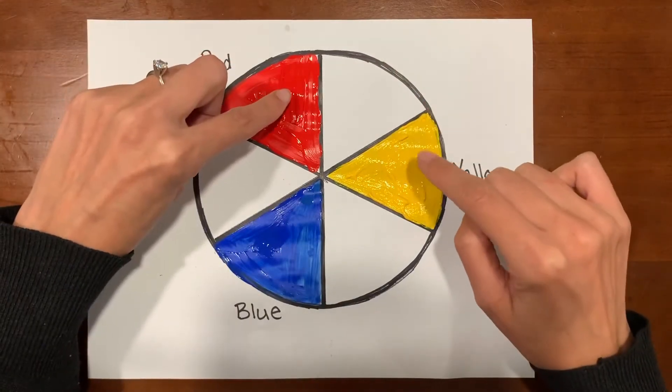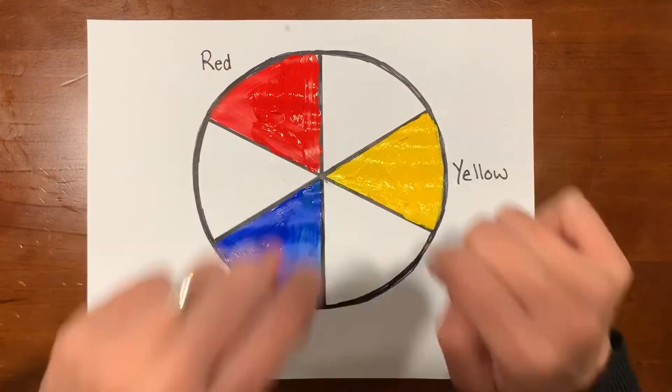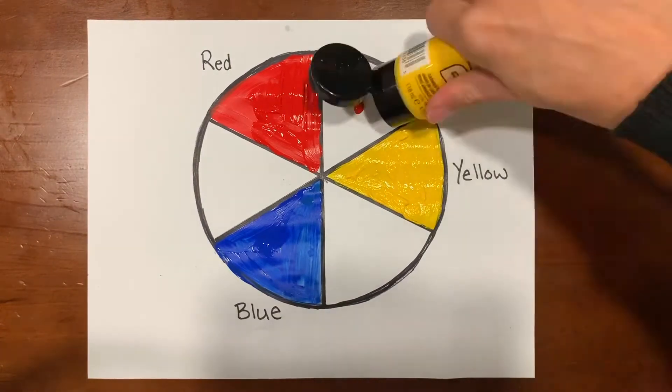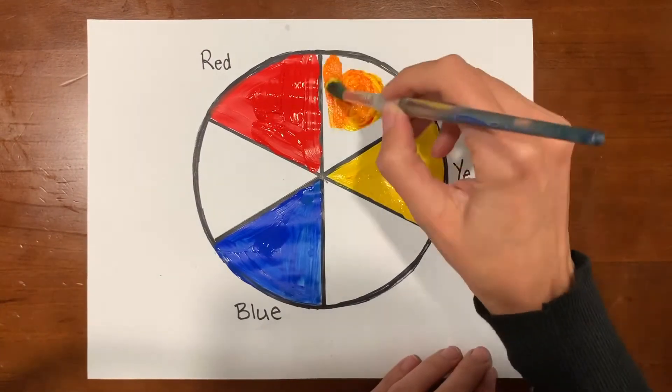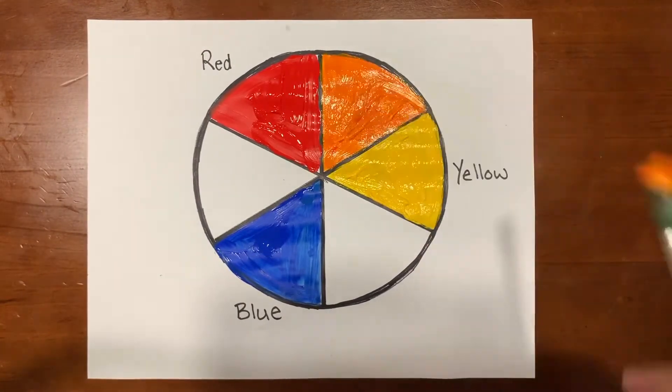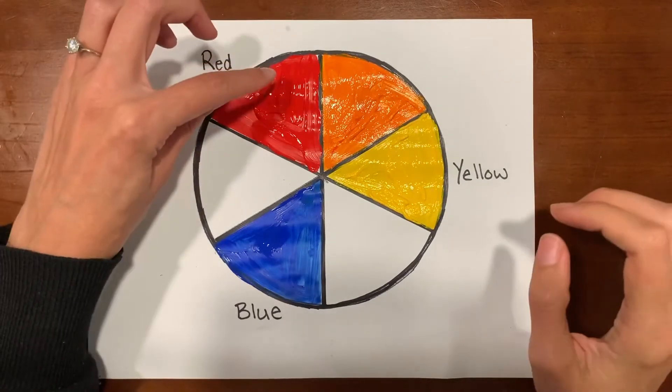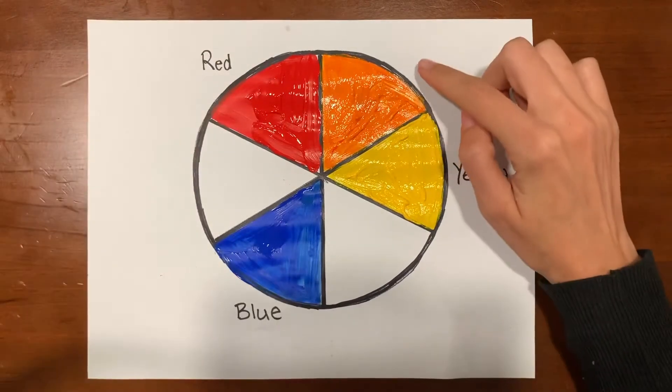Let's see what happens when you mix red and yellow together. By mixing red and yellow together we've created orange.